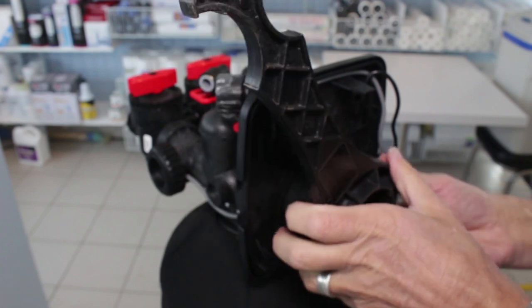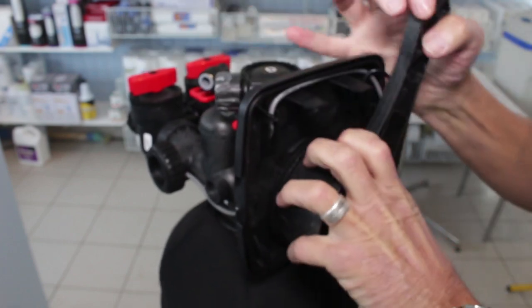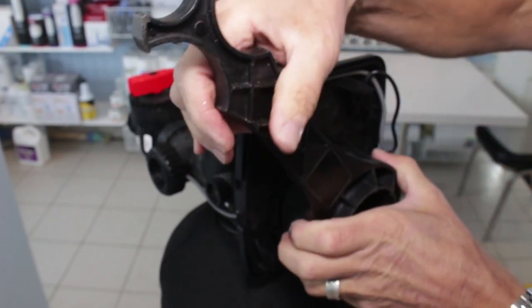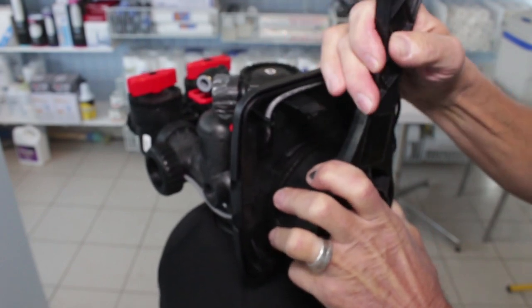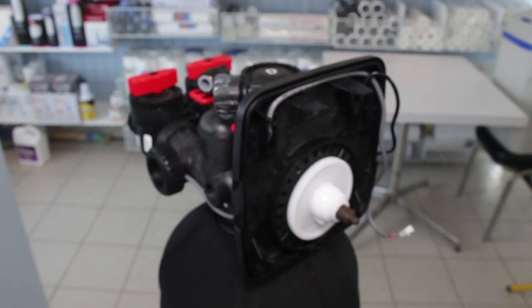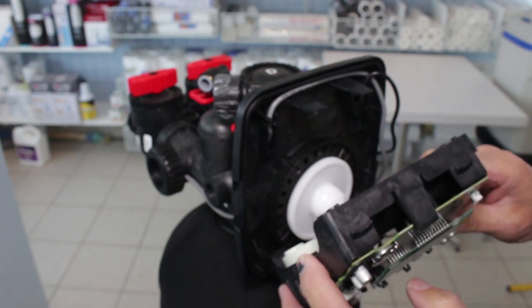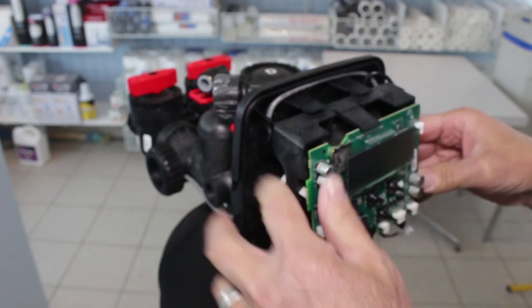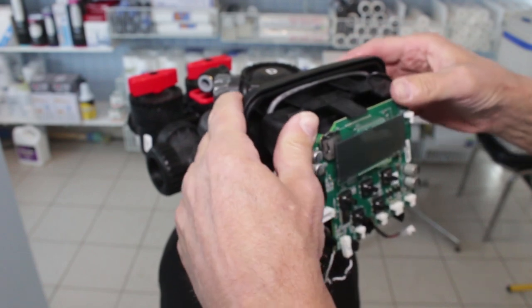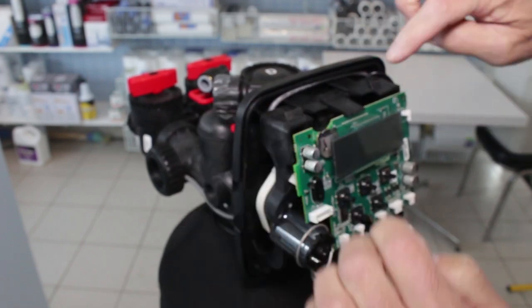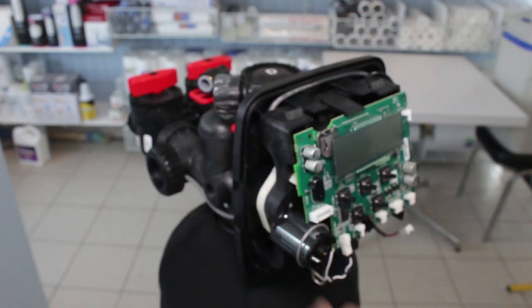So again, using the clock disassembly tool, just tighten that up a little bit. There you go. And then we're going to reattach this. Slip that inside there, and this has to snap all the way down. You need to make sure it snaps all the way back and all the way in.